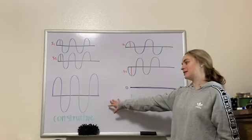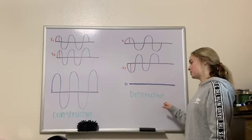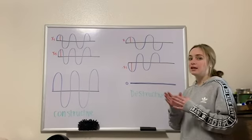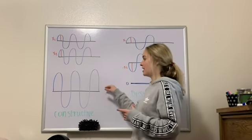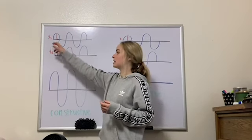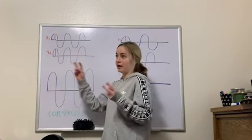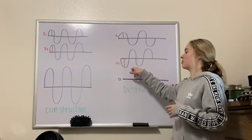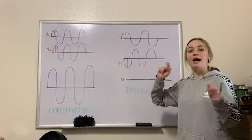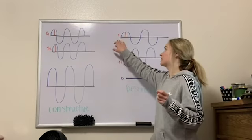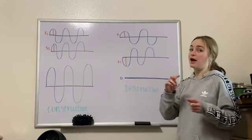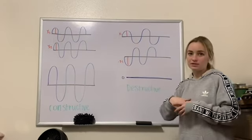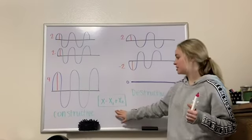The left is an example of constructive interference and the right is destructive interference. In constructive interference, you are adding disturbances that are exactly in phase, creating a wave with double the amplitude — 2x amplitude — but the same wavelength. In destructive interference, you add amplitudes of waves that are exactly out of phase, like adding negative x and positive x, which produces a wave with zero amplitude — the disturbances cancel.